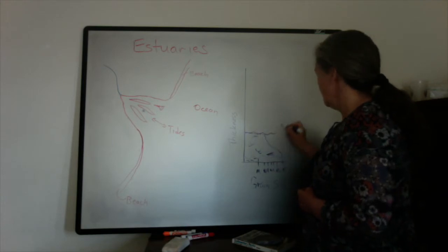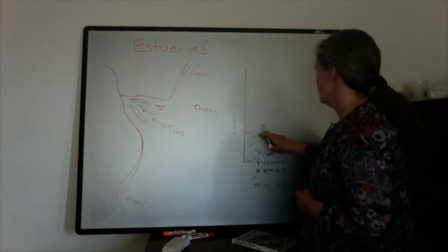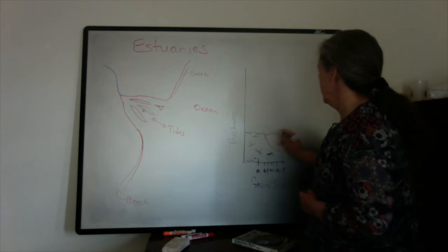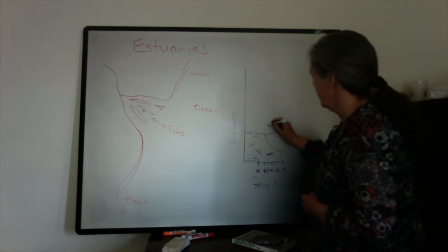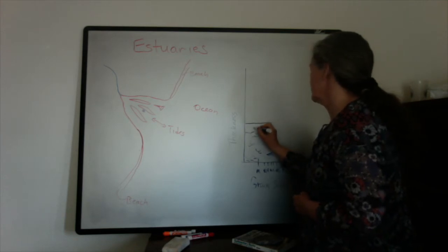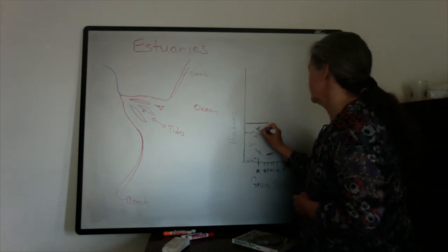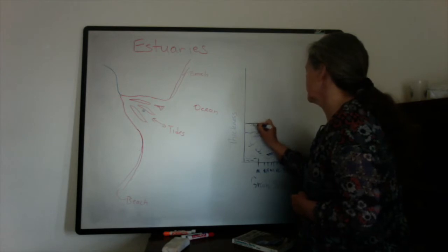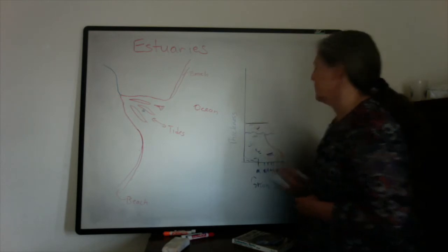And if we had fluvial deposition for quite a while there, we might have another channel, again fining upward with a sequence of structures including trough cross stratification and ripple cross lamination.